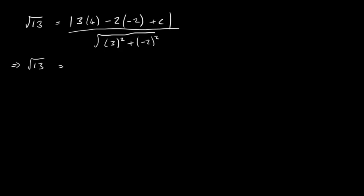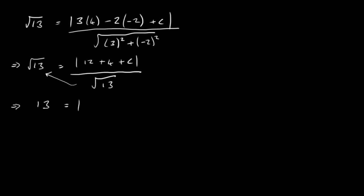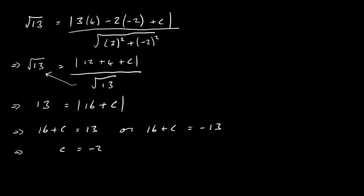Working through this: on the left we have √13, and on the right we have |12 + 4 + C| / √13 = |16 + C| / √13. Multiplying both sides by √13 gives 13 = |16 + C|. So 16 + C = 13 or 16 + C = −13, giving C = −3 or C = −29.